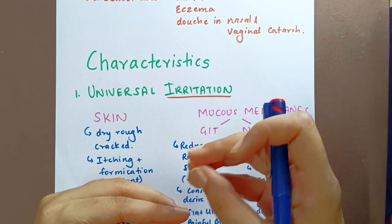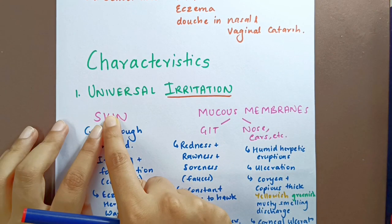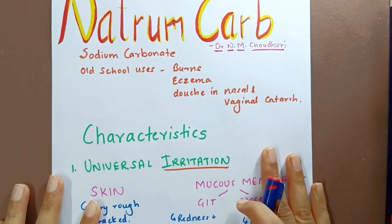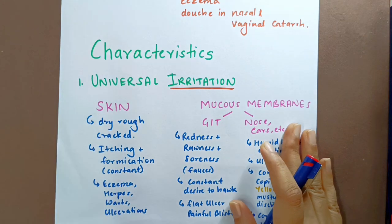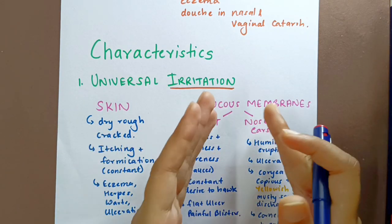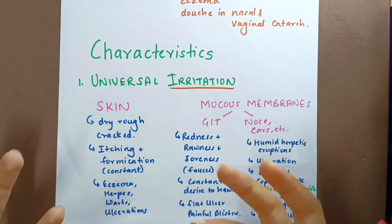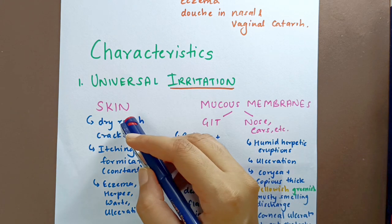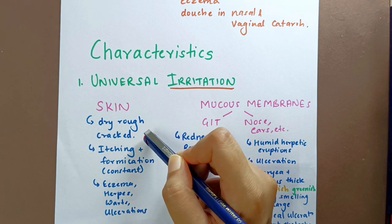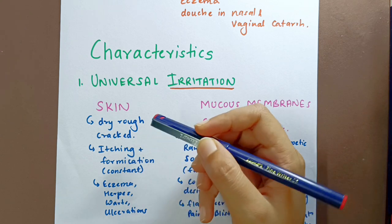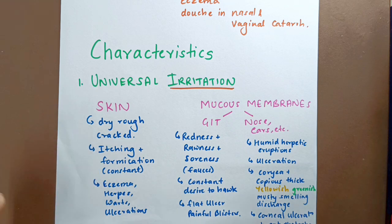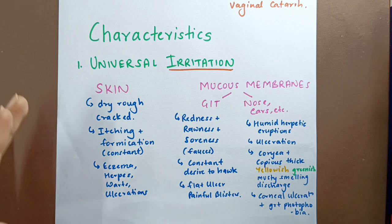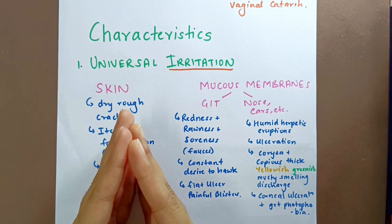This remedy has a marked irritating action over the skin and mucous membranes. On the skin, it produces dry, rough and cracked skin. There is itching plus formication which is constant. It can be used in eczema, herpes, warts, and ulceration — wherever these conditions are present along with other characteristic symptoms of Natrium Carb.